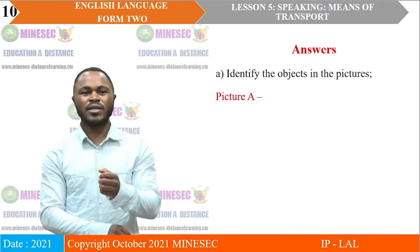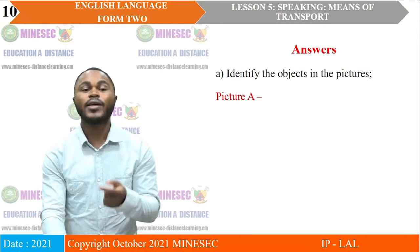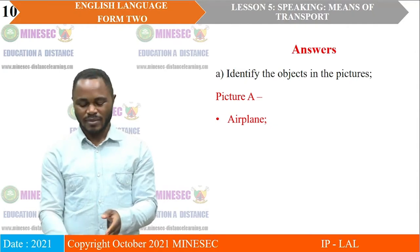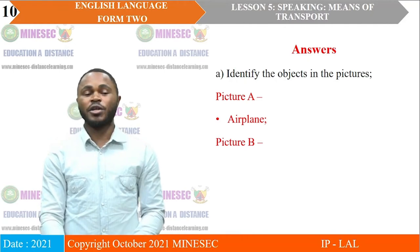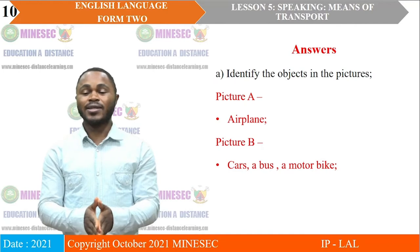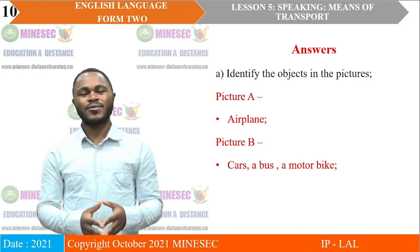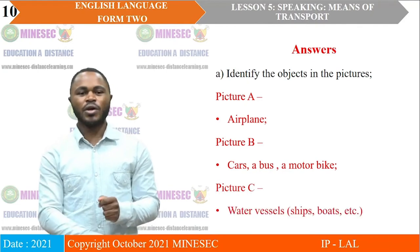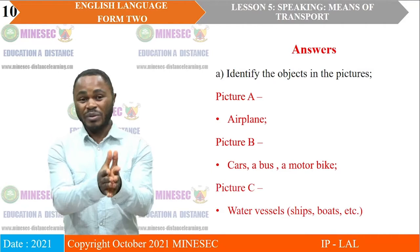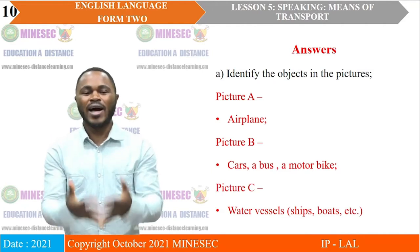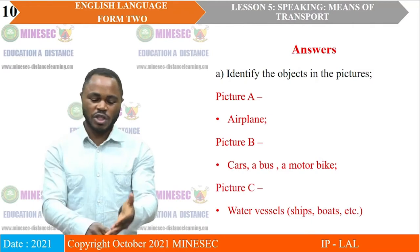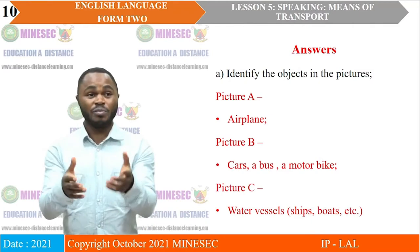Having looked at pictures A, B, and C, we can observe the following: the object depicted in picture A is obviously an airplane, or what we call an aeroplane. In picture B, there are cars — two cars — and then a bus and a motorbike. In picture C, we see water vessels. What brings them together is that they are all used on water. But they are not exactly the same — you have ships, you have boats, you have canoes, as depicted in picture C.